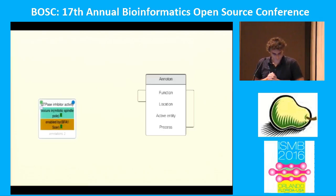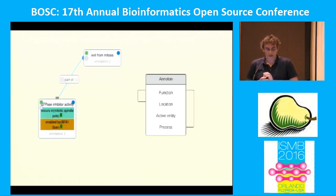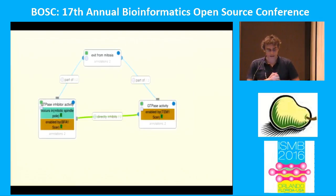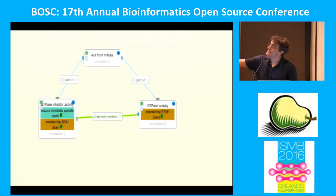Let's start matching these things together. The gene product here is BFA1 — enabled by BFA1. It occurs in mitotic spindle pole, which is the location, and the function is GTPase inhibitor activity. This is the same thing shown here, and in this case the process is part of exit from mitosis. As we build up our model, we can have this group of statements — really three ontology statements — associated with three other ontology statements, giving us GTPase inhibitor activity directly inhibits GTPase activity enabled by TEM1. We now have a much more graph-oriented model than before — no longer just disassociated lines in a large table.